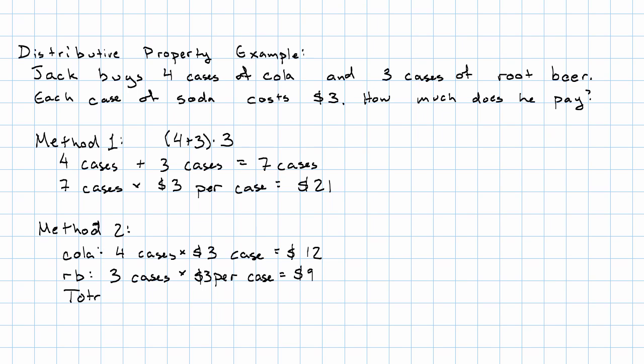And then, the total cost, twelve dollars plus nine dollars is twenty-one dollars. So, now we worked out four times three plus three times three.